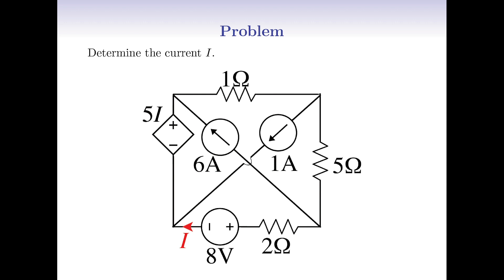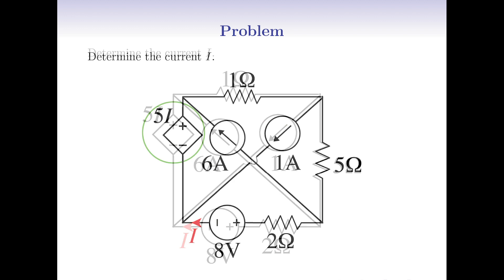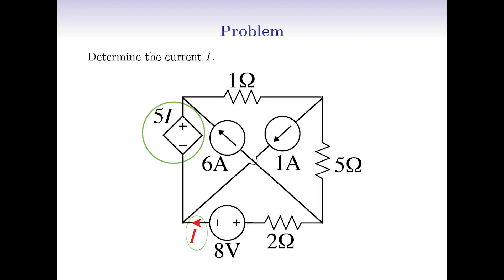Before we actually solve this problem, it's a good idea to discuss the structure of the circuit a little bit. First of all, this circuit includes three resistors, two independent current sources, and one independent voltage source. In addition, we spot a dependent voltage source which is dependent on the current I.